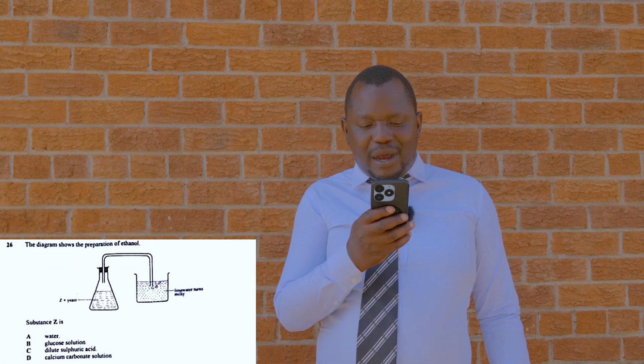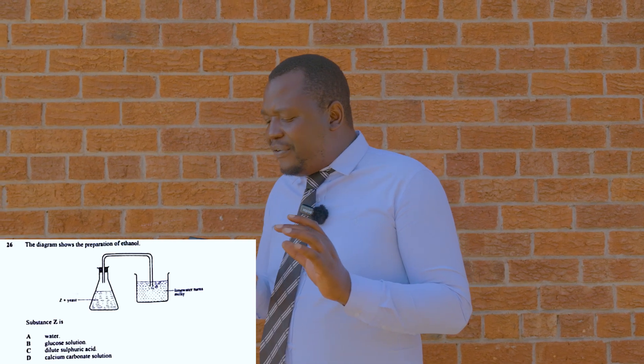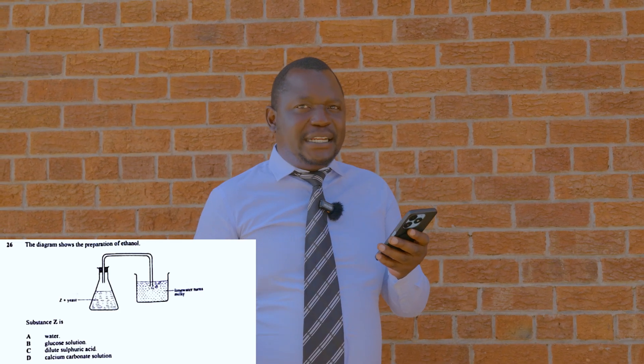Question 26: the diagram shows the preparation of ethanol. Substance Z is the answer. Fermentation is an anaerobic respiration process — respiration occurring in the absence of oxygen. In plants, anaerobic respiration of a glucose solution in the presence of yeast — which contains the enzyme zymase — produces ethanol and carbon dioxide. So substance Z is glucose solution.